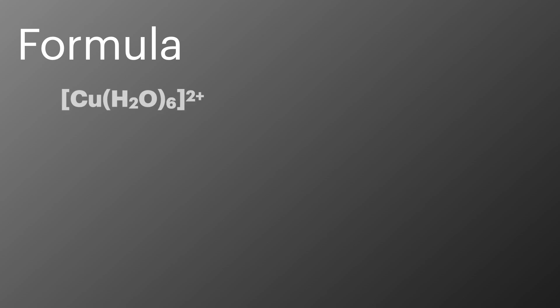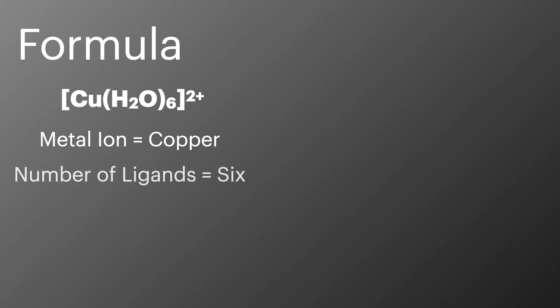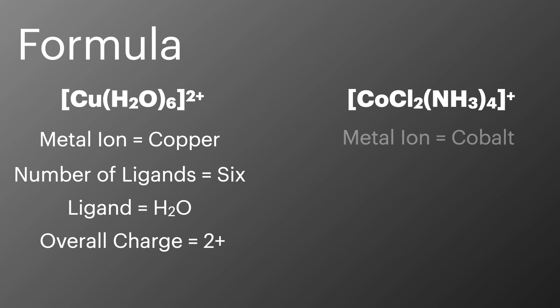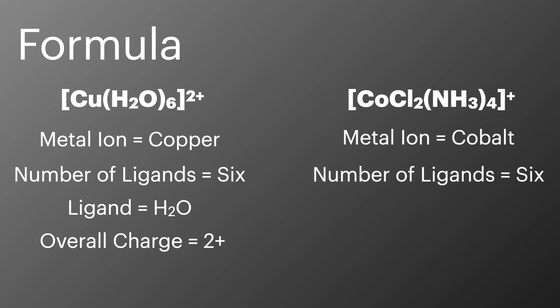We'll now look at the formula for two different complexes. Starting with the copper complex: the metal ion is copper, it has six water ligands, and an overall charge of 2+. For the second example, a cobalt complex: the metal ion is cobalt, it still has six ligands — two chlorine ligands and four ammonia ligands — and it has an overall charge of 1+.